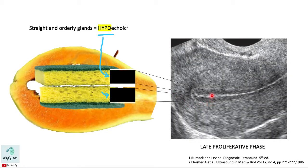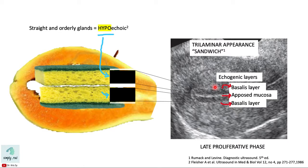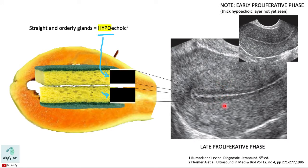You can see that there are two hypoechoic layers separated by opposed echogenic mucosal layers of the endometrial cavity. This is called the trilaminar appearance or sandwich appearance. This trilaminar appearance is composed of the opposed mucosa with the echogenic basalis layer on either side and the hypoechoic functionalis layer in between. Note that this sandwich or trilaminar appearance is seen when the functional layer is already thick, during the late proliferative phase. In the early phase, the hypoechoic layer is not yet obvious.